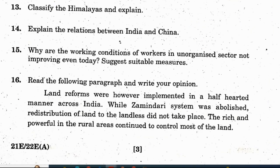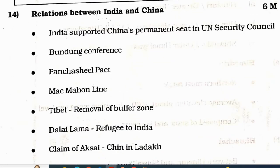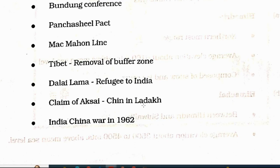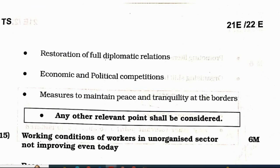Question 14: explain the relations between India and China. Key points: India supported China's permanent seat in the UN Security Council; Bandung Conference; Panchsheel Pact; McMahon Line; Tibet removal of buffer zone; Dalai Lama taking refuge in India; claim of Aksai Chin in Ladakh; India-China War in 1962; restoration of full diplomatic relations; economic and political competition; measures to maintain peace and tranquility at the borders. Any other relevant points can also be considered.